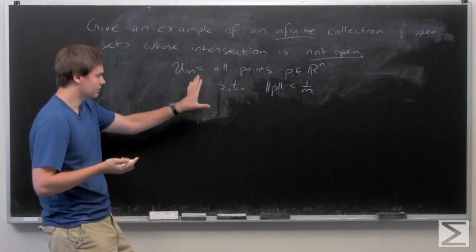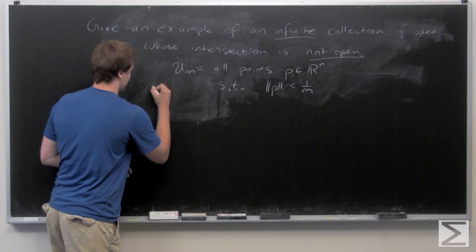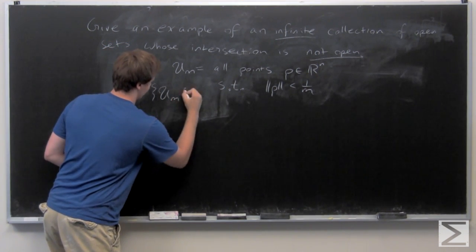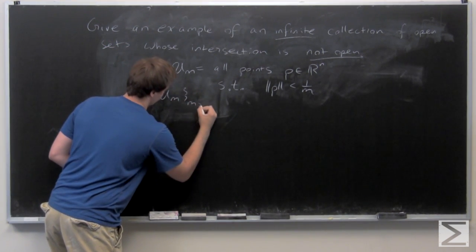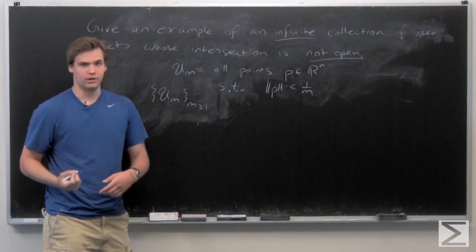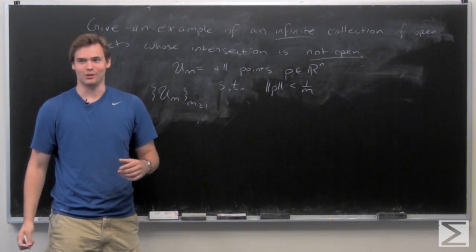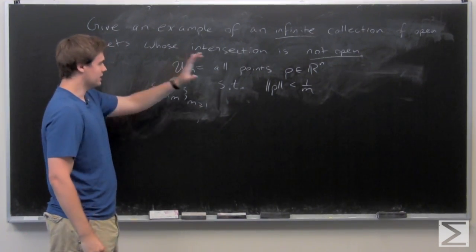So we now have a collection, an infinite collection of U sub m for all m greater than or equal to 1, because we don't want to worry about m equals 0. So we now take this intersection.